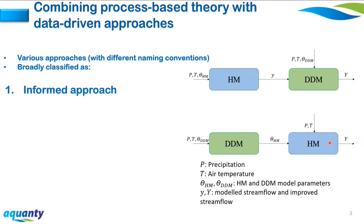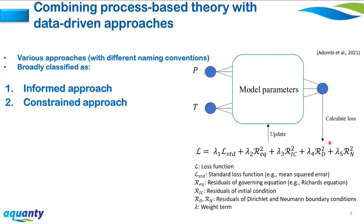The 'constrained' approach adds physical equations to the loss function of a data-driven model. The loss function consists of a standard loss (e.g., mean squared error), plus the residuals of a governing equation such as Richards' equation, residuals of initial conditions, and boundary conditions — all scaled with a weight term lambda to update the model parameters.